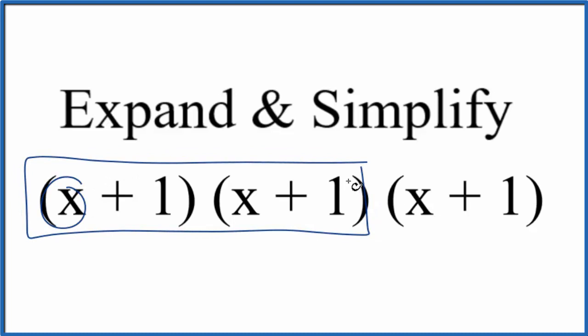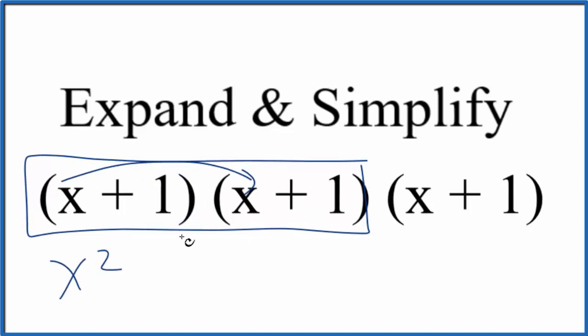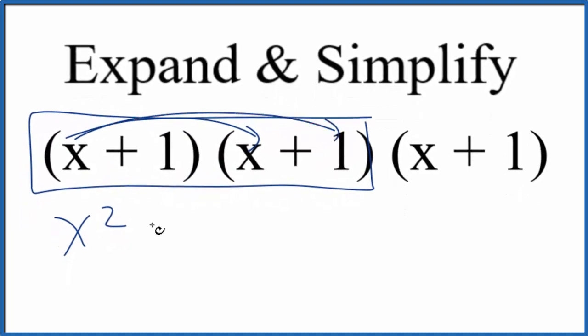So we're going to multiply x by everything here, and then 1 by everything here. So let's do the x. x times x, that's x squared. x times 1, that's going to be 1x, we're just going to call that x. Now we do the 1 times everything, 1 times x, that's just x. And then 1 times 1, that's 1.